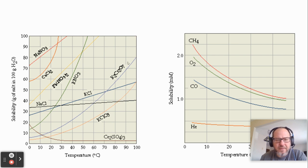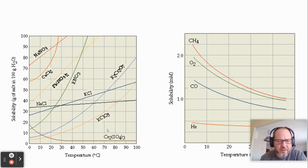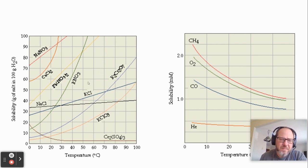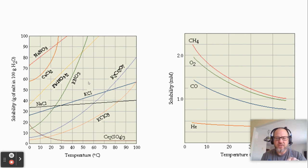Here are two graphs showing the effect of solubility and temperature. Notice that for most ionic compounds, as temperature increases, solubility increases. There are a couple of outliers — for example, cesium sulfate solution has to be made cold. But for everything else, solubility increases as temperature increases. This is because as particles move faster, you're able to slide more solute particles in, and they can have more interactions.